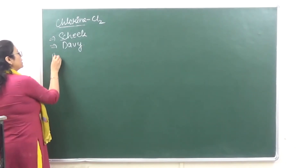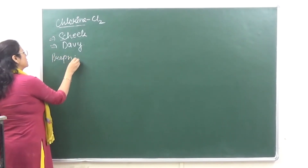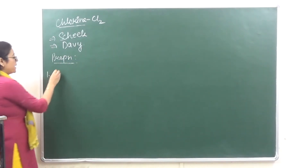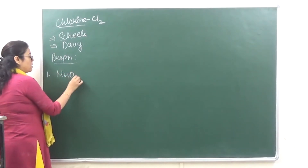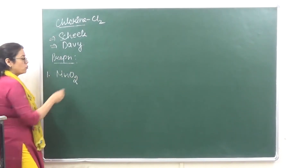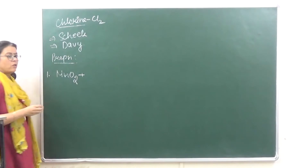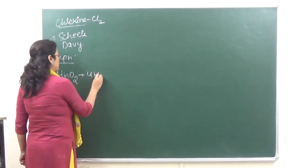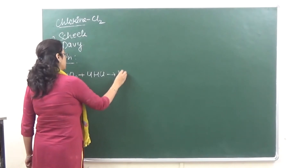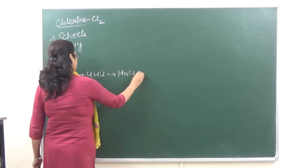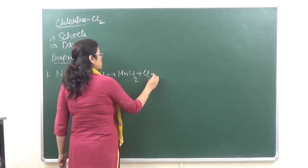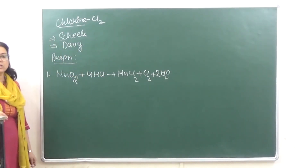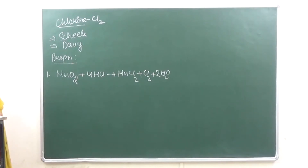How do we prepare Chlorine? The first preparation method is by heating pyrolusite — MnO2, which is known as pyrolusite — with HCl.